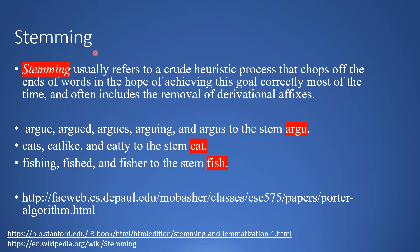Stemming and lemmatization are two steps which are done in the pre-processing stage of an NLP pipeline. Stemming usually refers to the crude heuristic process which chops off ends of words in the hope of achieving this goal correctly most of the time, and it often includes the removal of derivational affixes. For example, the words argue, argued, argues, arguing would be converted to the stem 'argue'. Words like cats, catty would be stemmed to 'cat'.